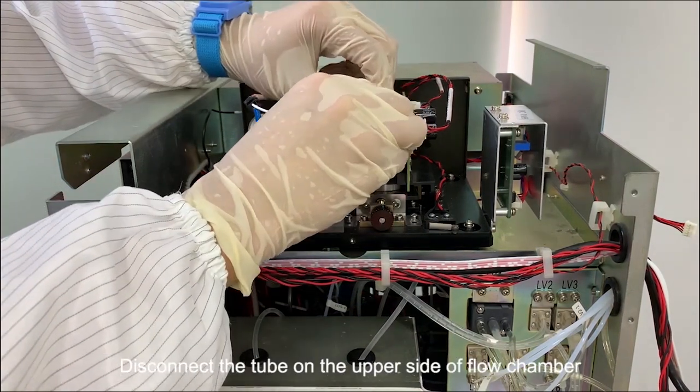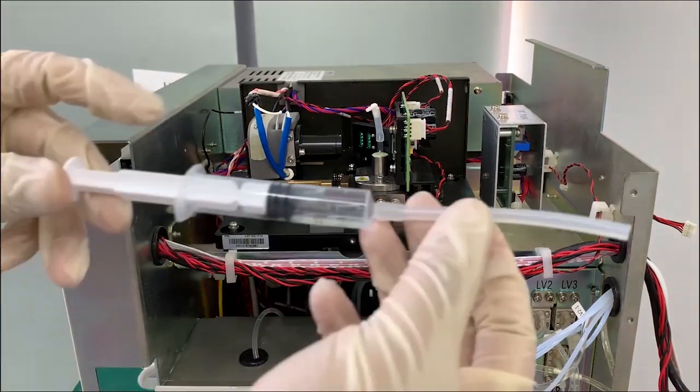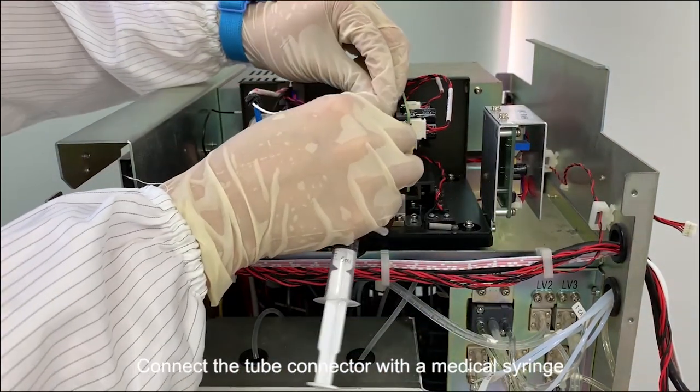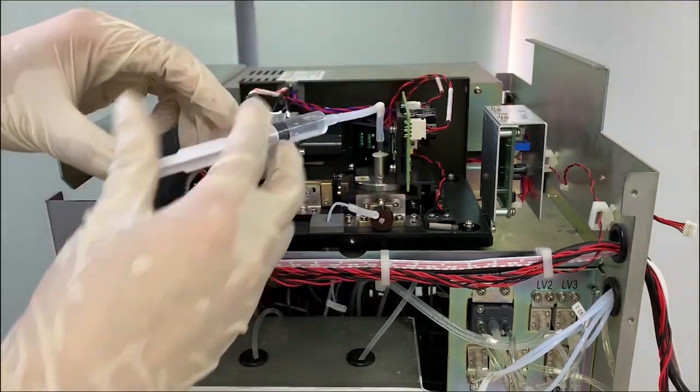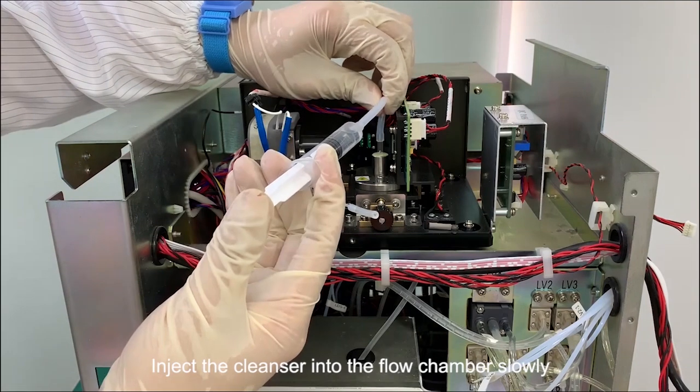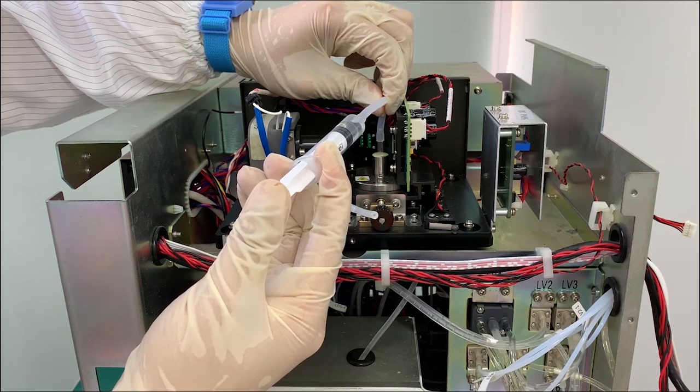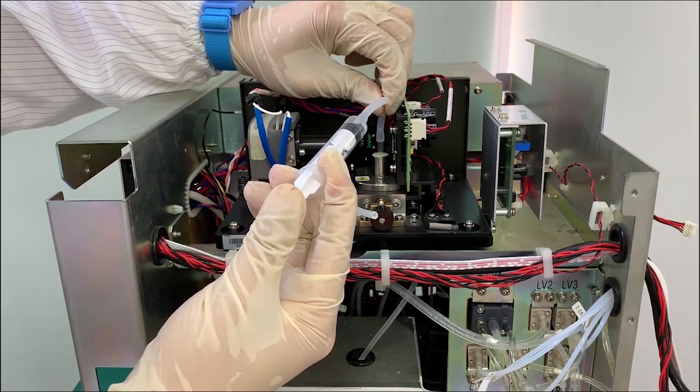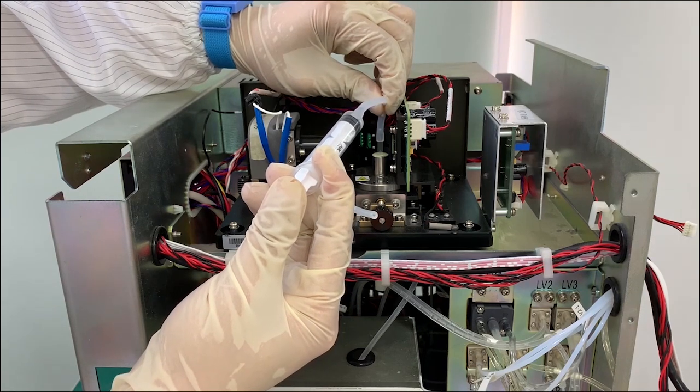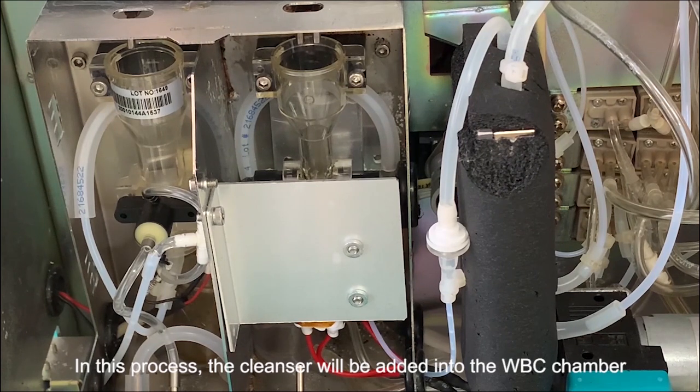Disconnect the tube on the upper side of the flow chamber. Connect the tube connector with a medical syringe. Inject the cleanser into the flow chamber slowly. In this process, the cleanser will be added into the WBC chamber.